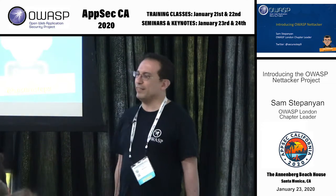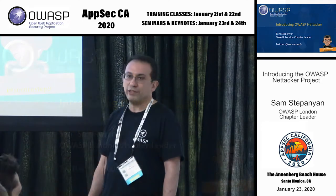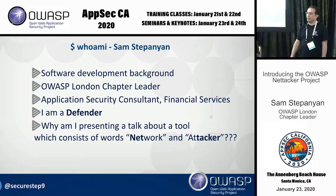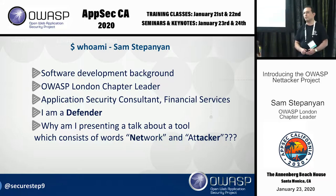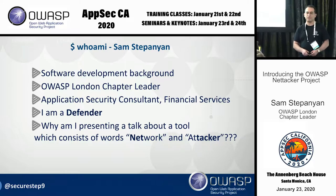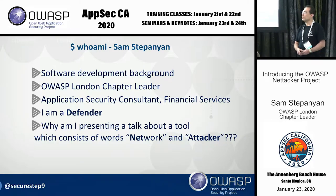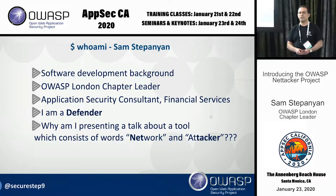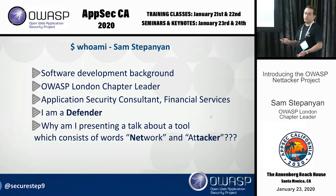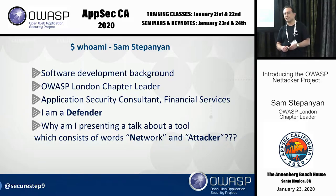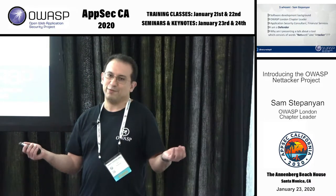My name is Sam. I come from London. I'm on Twitter — my handle is SecureStep9. I come from a software development background, I'm an ex-developer who moved into application security in 2005. I am one of the OWASP London chapter leaders — we have two others, and Andrew Letts is actually volunteering at this conference as well. I'm an independent application security consultant, mainly consulting for big banks and financial services companies in London. I am a defender.